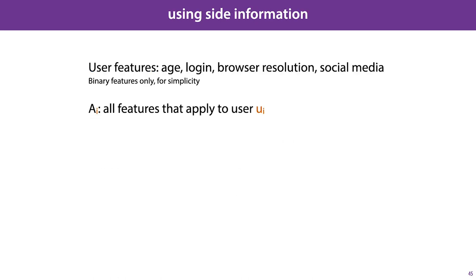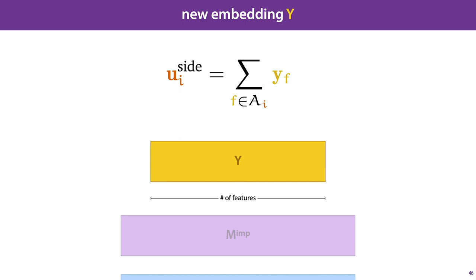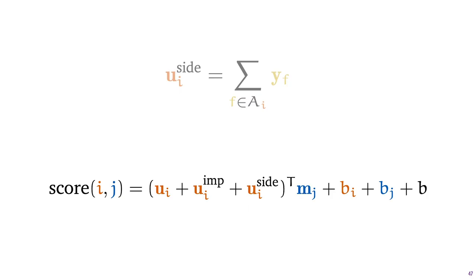To simplify things, we assume that all features are binary categories — the feature either applies to the user or it doesn't. We introduce a set A_i that is simply the subset of features that apply to the i-th user. With this, we follow the same logic as for implicit feedback and add another matrix of embedding vectors — one embedding for each feature that can apply to a user. We sum up all the features that apply to user i and get another representation for the user, u_side_i. We add this third representation for the user to the sum inside the dot product and compute our score as before. We could do the same thing for movie information, but we take that as read to keep the score simple.